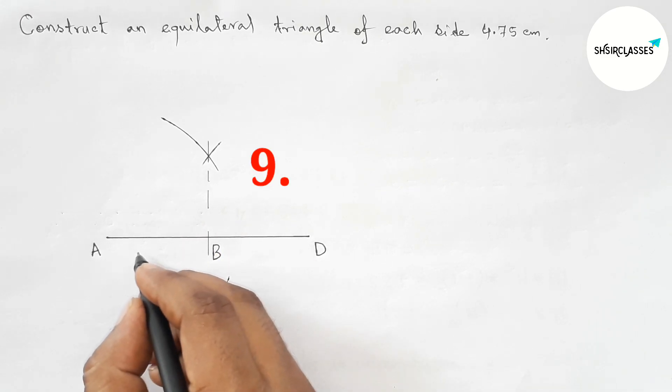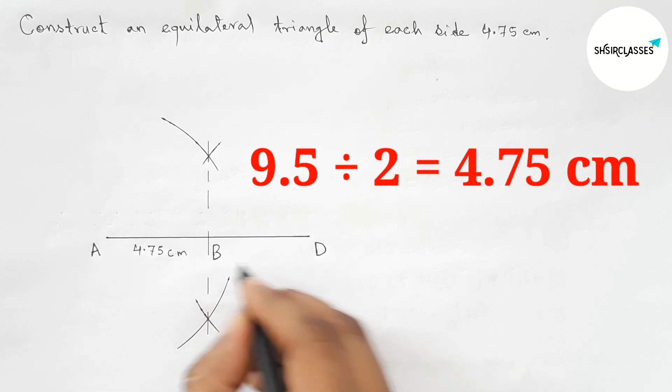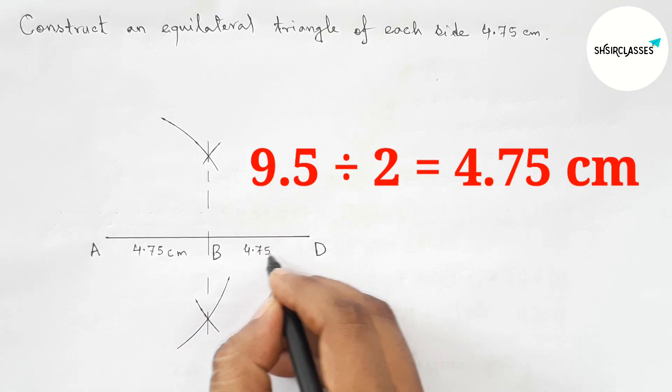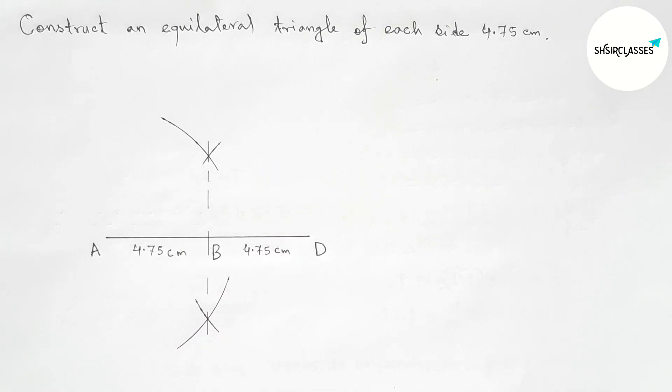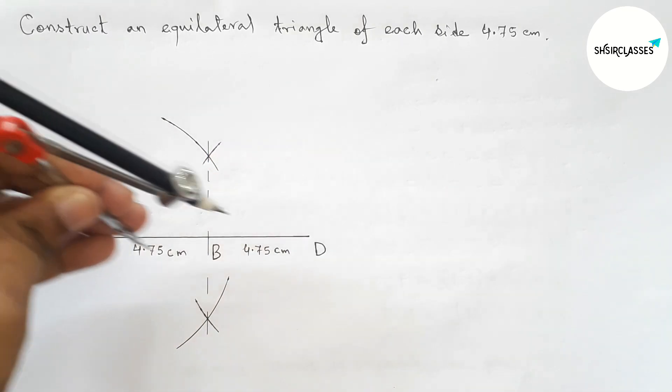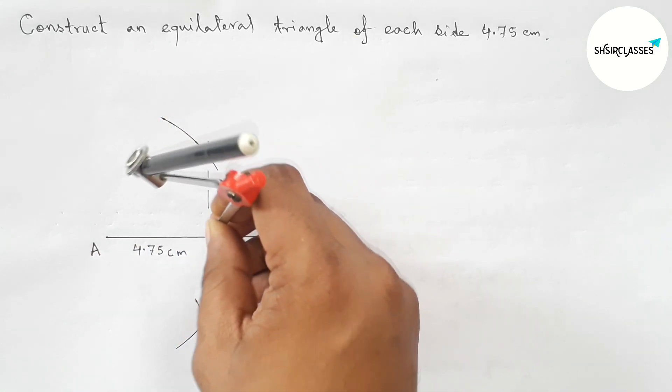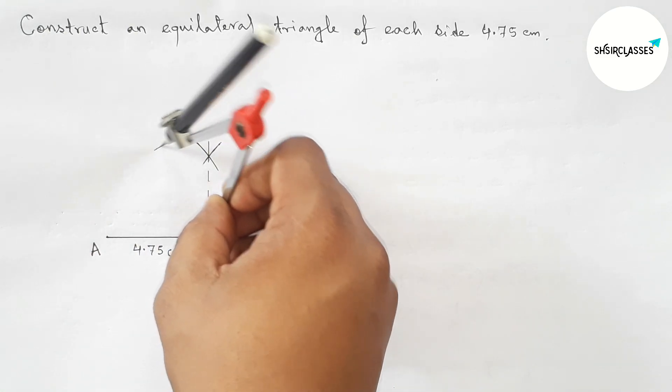So taking point here B, so AB equals 4.75 centimeter and BD equals also 4.75 centimeter. Okay, next taking the length AB with the help of compass by this way. Perfect.